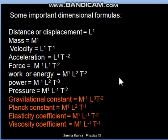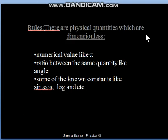Now some rules also we have to remember: which physical quantities appear dimensionless. Any numerical value like pi or any fraction like 3/2 or 1/3 are dimensionless. If any ratio is appearing of the same quantity like angle, it is also dimensionless, or some constants like sin theta, cos theta, log—these are also dimensionless.